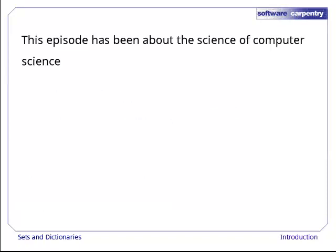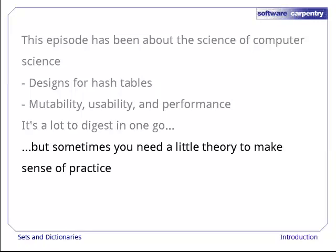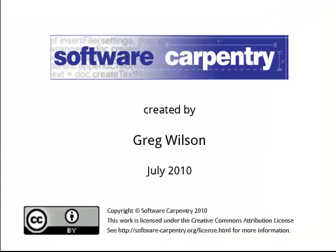Let's step back for a moment. This lecture has been about the science in computer science, things like the design of hash tables and the trade-offs between mutability, usability, and performance. It's a lot to digest in one sitting. But sometimes, the only way to understand why things work the way they do is to understand the theory they're based on. We promise to get back to practicalities in the next episode.